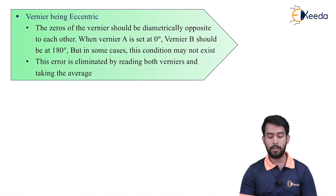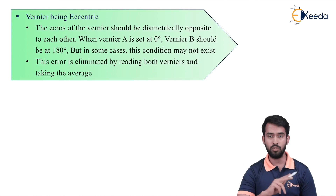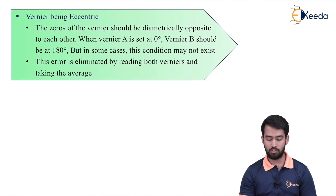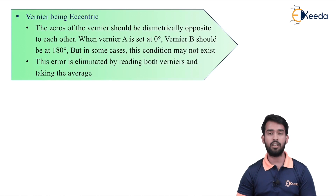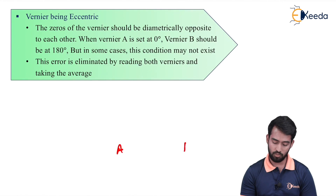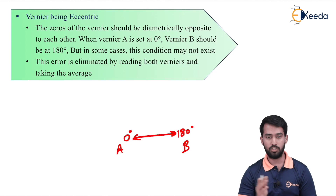Next is the vernier being eccentric. The zero of the vernier should be diametrically opposite to each other — vernier A zero and vernier B zero should be opposite. When vernier A is set to 0, vernier B should automatically be set to 180 degrees. In some cases this condition may not exist, so this error is eliminated by reading both verniers and taking the average, since they are diametrically opposite to each other.